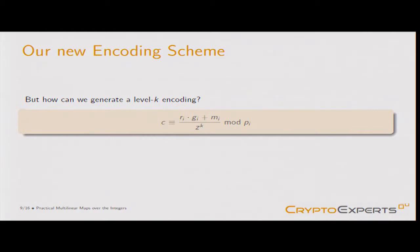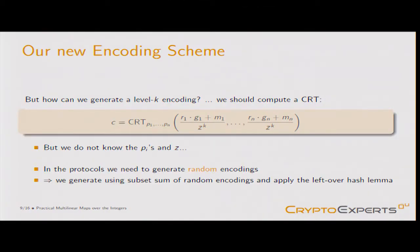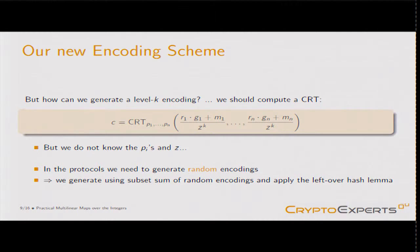The problem is how to generate level-k encodings, since we don't know the p_i (the public parameters only contain their product) and we don't know z, which is a secret masking value. In protocols we need to generate random encodings. What we do is publish in the public parameters a large set of random encodings, and we perform a subset sum of them, using the leftover hash lemma.